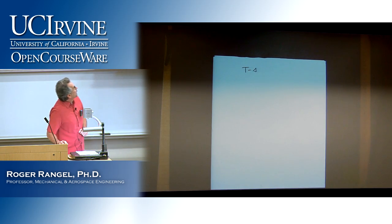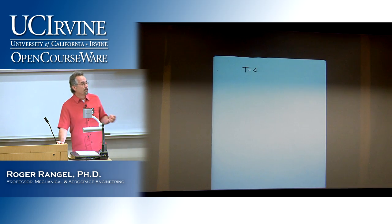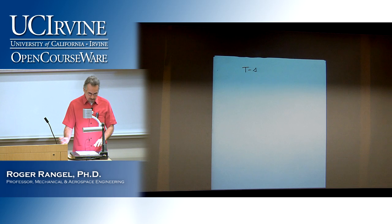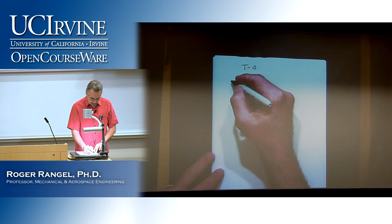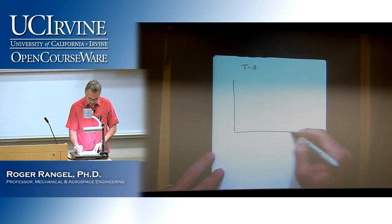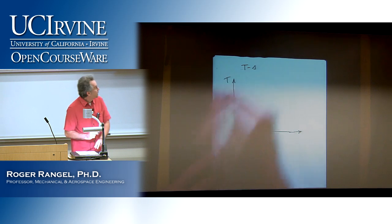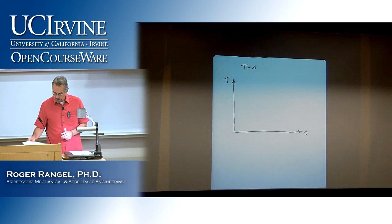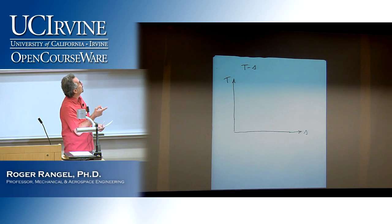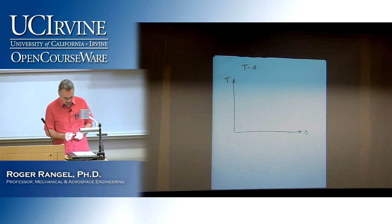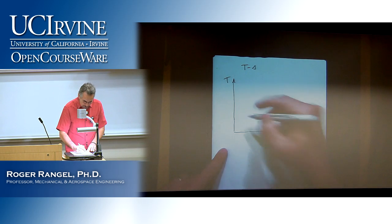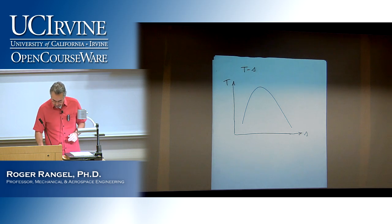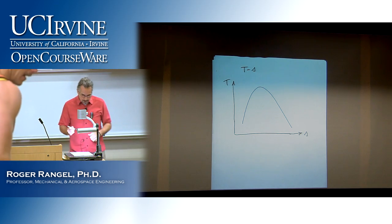We could also do a temperature-volume diagram, which you have seen before, but since we can use entropy and it's useful because of the nature of the two isentropic processes, this will be valuable to plot. So let's plot temperature versus entropy. The Rankine cycle operates with a mixture of liquid and vapor — when the fluid goes into the boiler it comes in as a liquid but comes out as a superheated vapor. Let's put the dome in here.